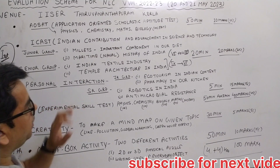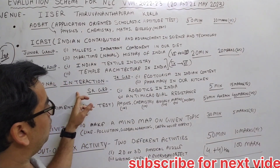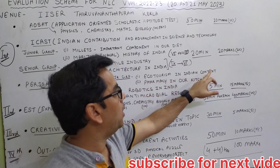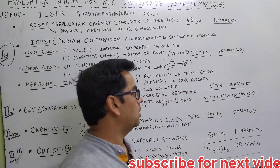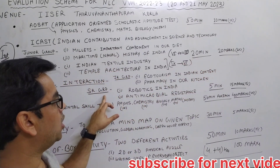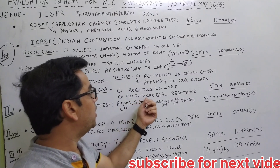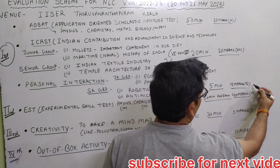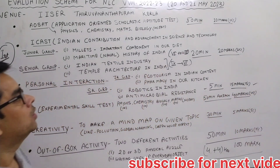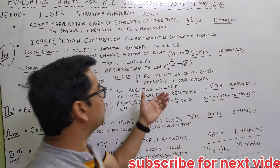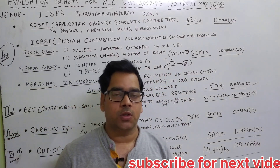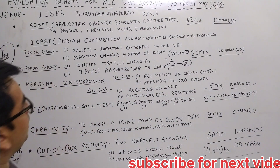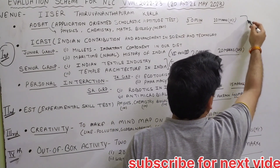The third category is the personal introduction. Topics are given for the junior group and senior group. For the junior group, the topics are eco-tourism in India and pharmacy in our kitchen. For the senior group, the topics are robotics in India and antimicrobial resistance. Five minutes are given for this section and it carries 50 marks. At the camp center, evaluators will ask questions and you have to answer them within 5 minutes. This completes the first part.